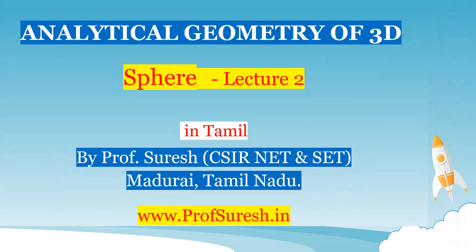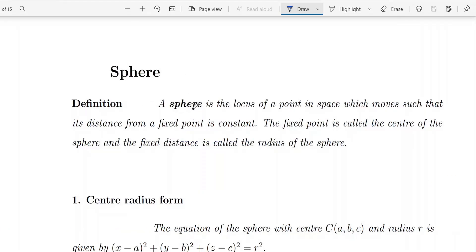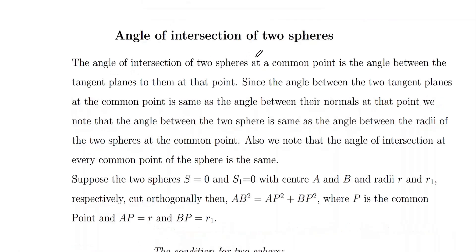Analytical Geometry of 3D lecture in Tamil by Professor Suresh. The angle of intersection of two spheres at the common point is the angle between the tangent planes to them at that point. We have the angle between the tangent planes of the first sphere and the second sphere — that is the angle of intersection of two spheres.